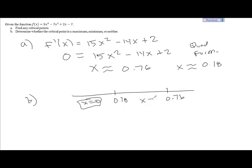So we can pick our test points. I'll choose x equals 0. I'll choose x equals—this is a 0.18—okay, so I'll pick maybe a half. And then over here I'll pick x equals 1.